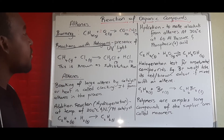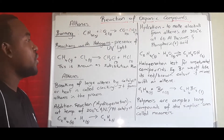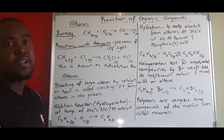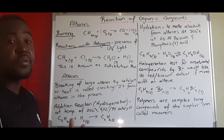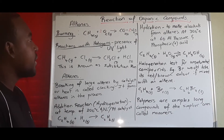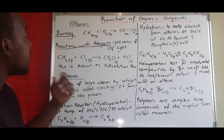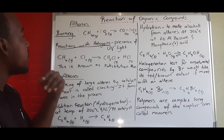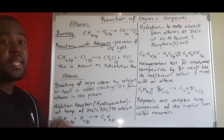Alkanes also react with halogens. Halogens are Group 17 elements like chlorine, bromine, and iodine. They react with halogens in the presence of UV light.